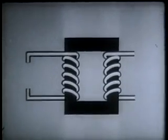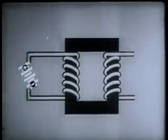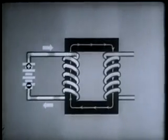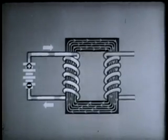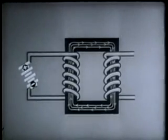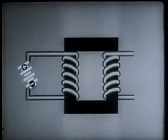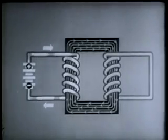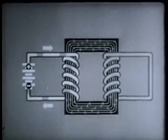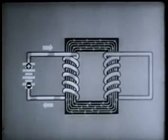Here's what happens when we send direct current through one of the windings. A magnetic flux builds up in the core. Now, let's see what happens when the other winding is part of a closed circuit. Current flows through it during the instant while the magnetic flux is building up. As soon as the magnetic flux reaches a steady value, however, this induced current disappears.